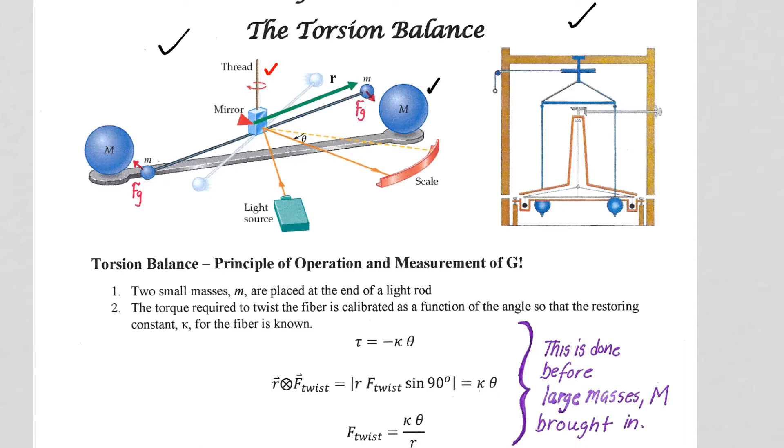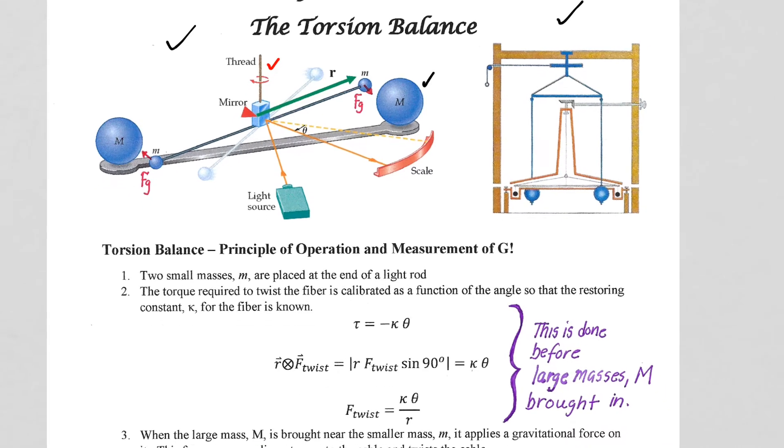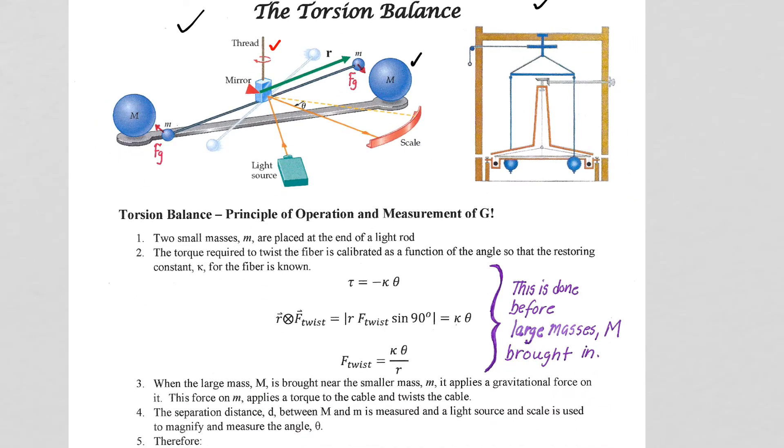And that property is the property that Cavendish utilized to be able to measure the torque that gravity ultimately would cause on the little masses, m and m, to twist the fiber.